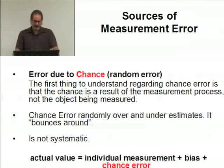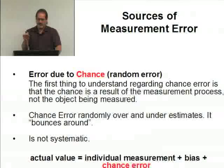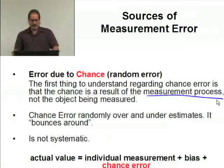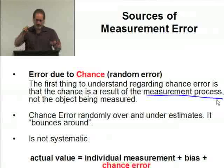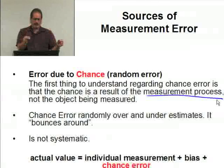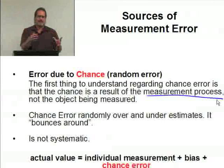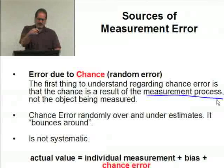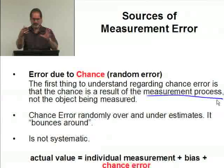Now, chance error, commonly referred to as random error. The first thing you need to understand regarding the chance error is that the chance is a result of the measurement process, not the object being measured. It's the process. Well, on this string, if you take this clock and run the string over it and put it on a ruler and measure the circumference, then give it to somebody else and they do it, they're going to come up with something probably slightly different. Chance error is simply a result of the process that you're following, not what's being measured.